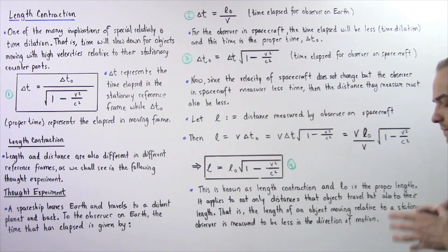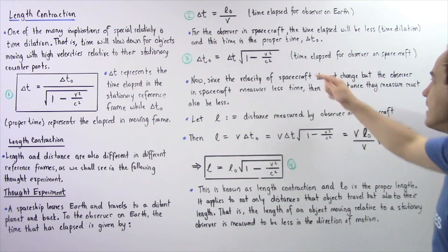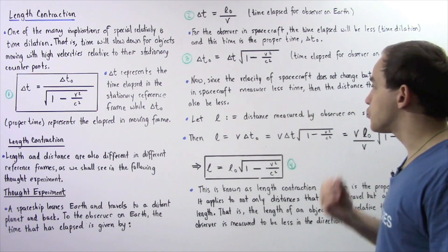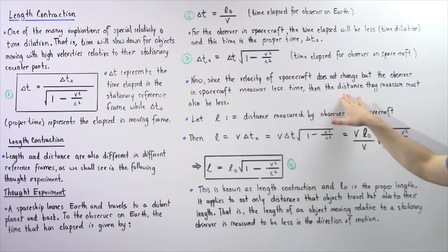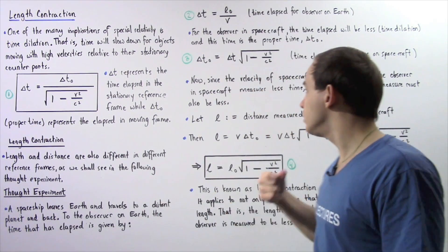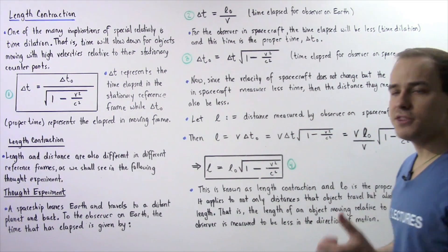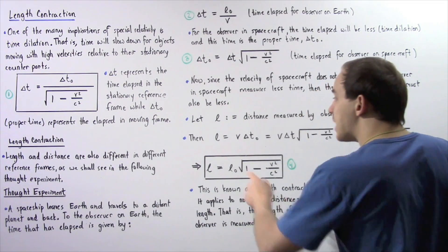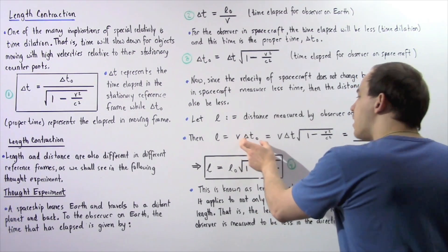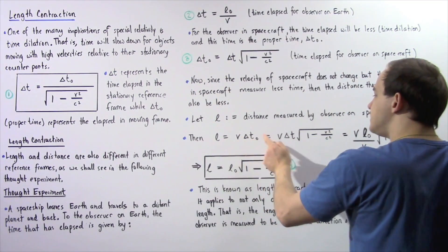Because the velocity measured by the person on the spacecraft does not change — it stays at v — but the observer in the spacecraft measures less time, that means the distance measured by the observer on the spacecraft is also less. If L represents the distance measured by the observer on the spacecraft, then L equals v multiplied by the proper time delta t naught.